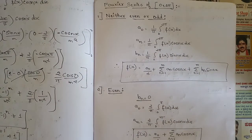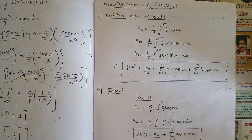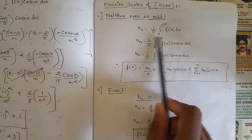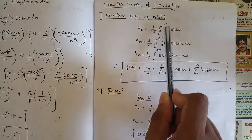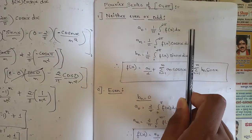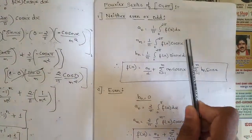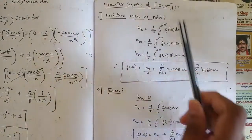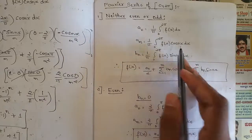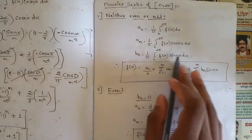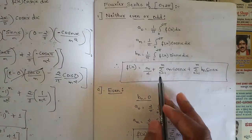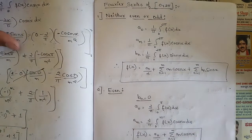For the interval from zero to two pi, the same thing applies — we have three cases: neither even nor odd, even function, or odd function. For each case there are three sets of formulas for all the Fourier coefficients. In the case of neither even nor odd, a-naught equals one over pi times the integral from zero to two pi of f(x) dx. In the case of minus pi to pi it was one over pi from minus pi to pi, so here only the limits change. The same applies for a_n and b_n.